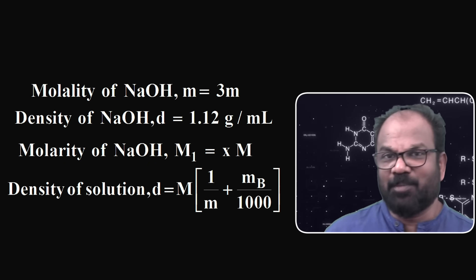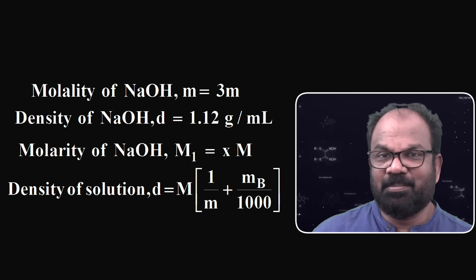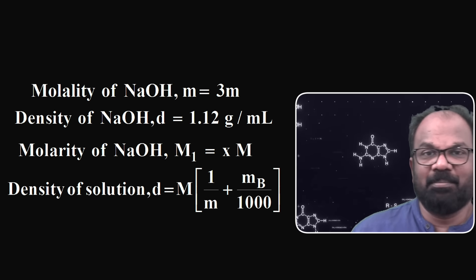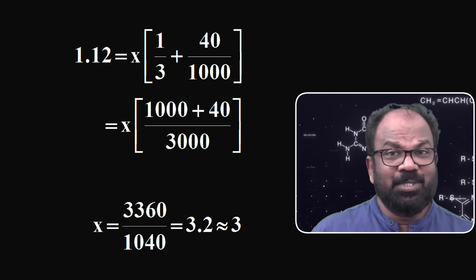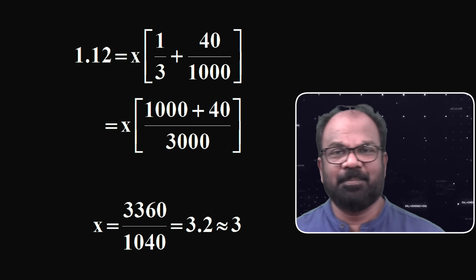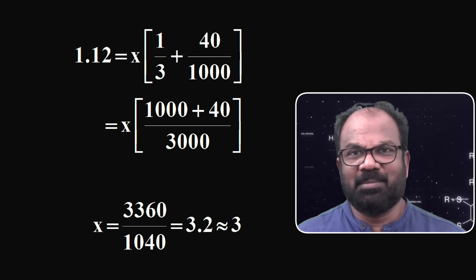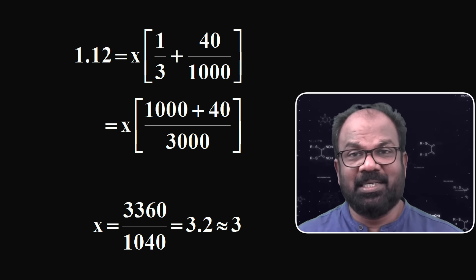In this question, molality and the density of a NaOH solution are given; we need to calculate molarity of the solution. The density of NaOH solution d is equal to 1.12 g/ml and molality m is equal to 3 molar. We know the relationship: d = M × (1/m + molecular mass of solute Mb / 1000). Molarity of NaOH is taken as X. Substituting the values of density, molality, and molecular mass of solute, the molarity is calculated to be approximately 3.2 molar, approximately equal to 3. So here the answer is option number 2.